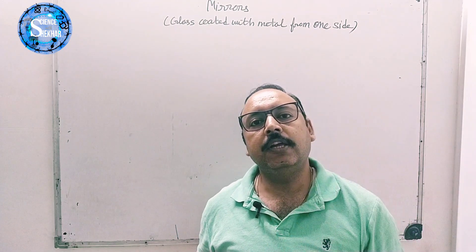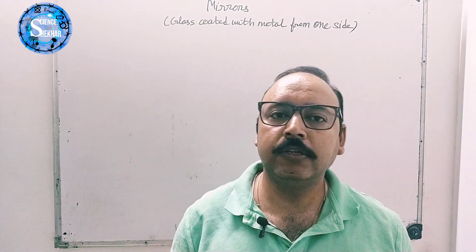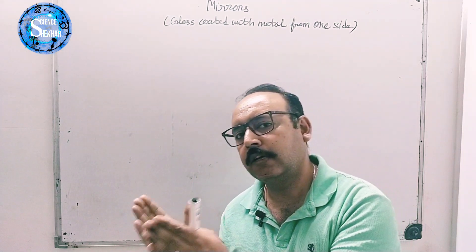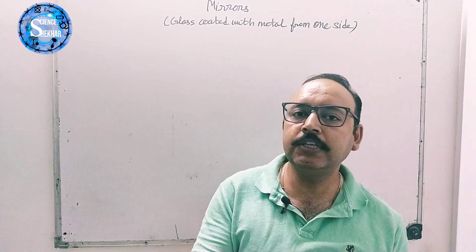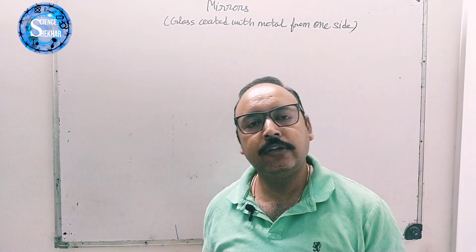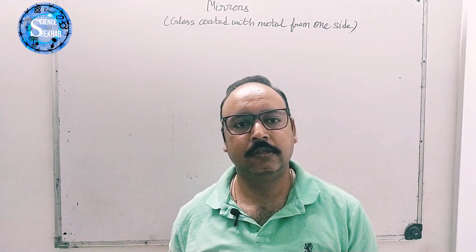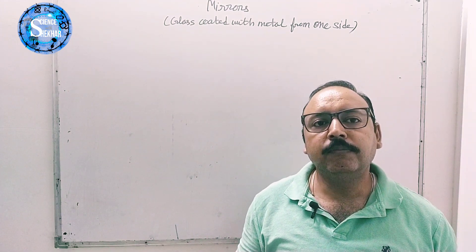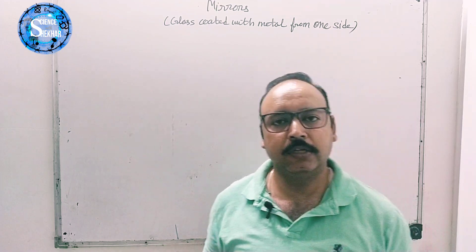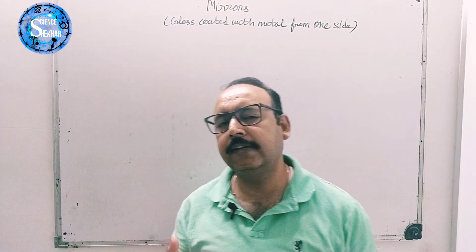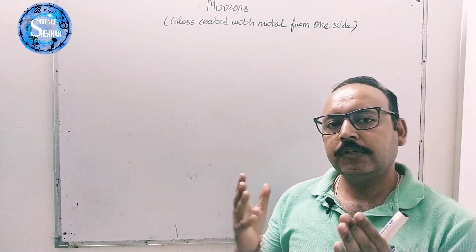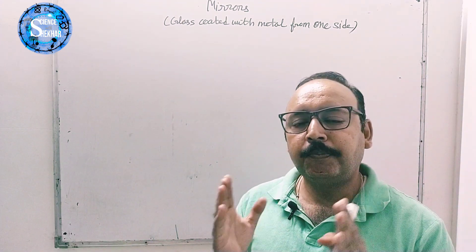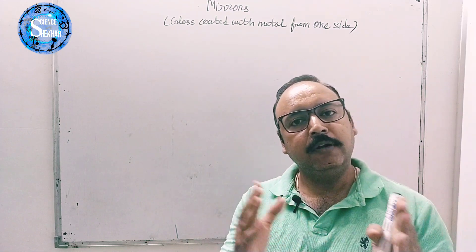Mirrors are basically of two types: one is plane, which we are using at home, and another is spherical, which we are using in our cars, in torches, in street lights. There are a number of uses for spherical mirrors. Now, how do we differentiate between plane and spherical mirrors?